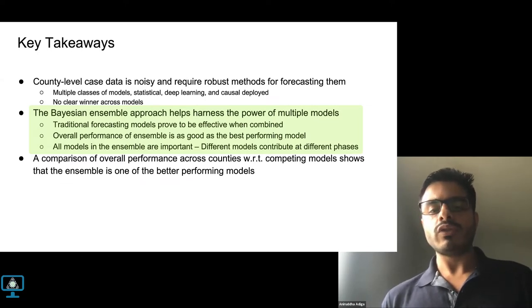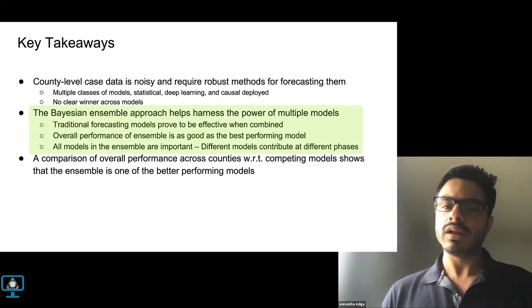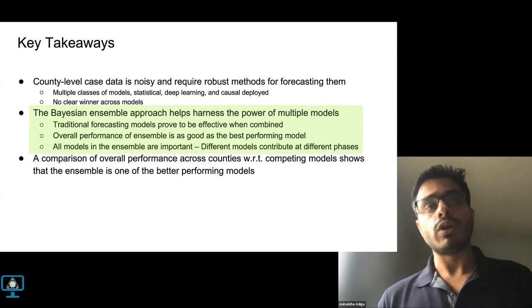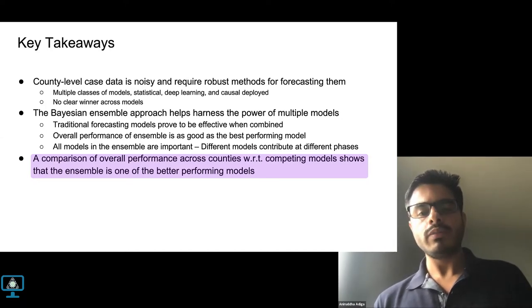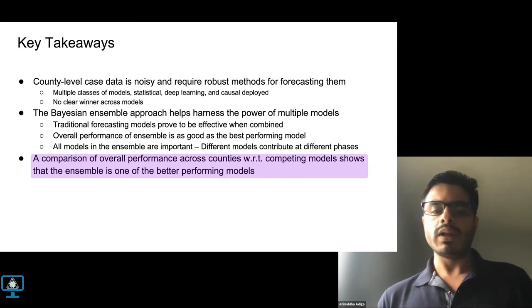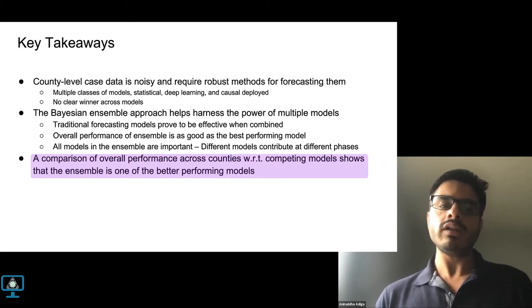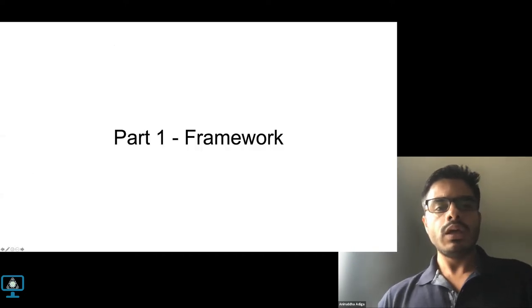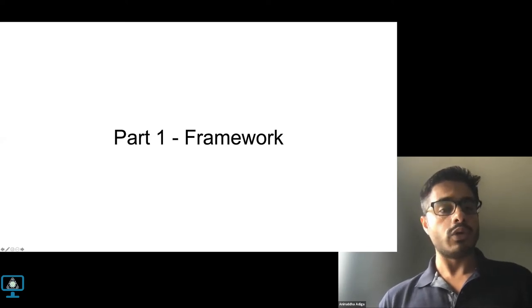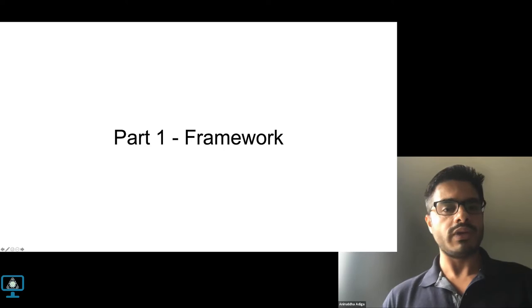Also in terms of understanding the importance of each of these methods we have performed qualitative as well as some quantitative analysis. These analyses indicate that all models are important and removing a model from the ensemble can severely influence the overall performance significantly. Finally, a comparison of performance with respect to other county level models from the forecast hub shows that we perform well consistently across one, two, three and four week ahead forecast horizons. And I'll go into the details as we proceed. In the first part, as I said, I'll just discuss about the framework that we have developed for forecasting on a weekly basis.